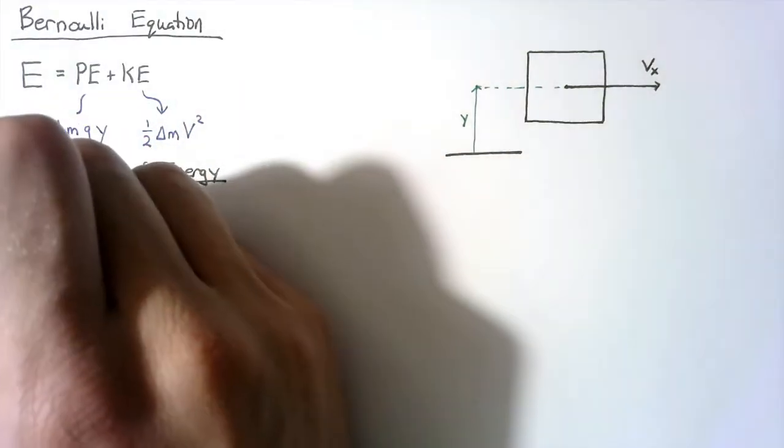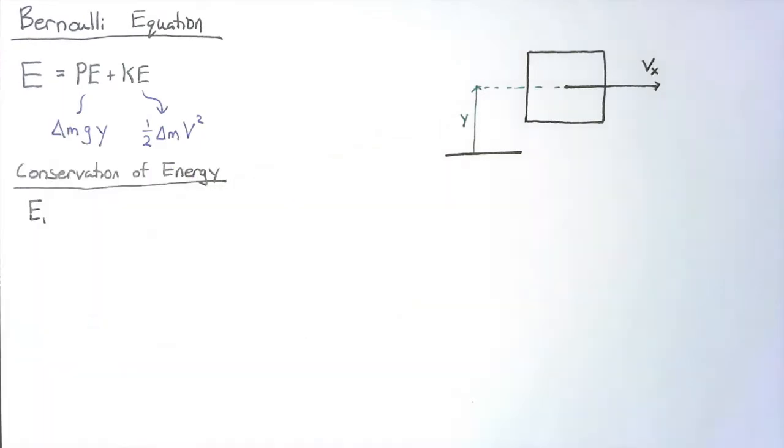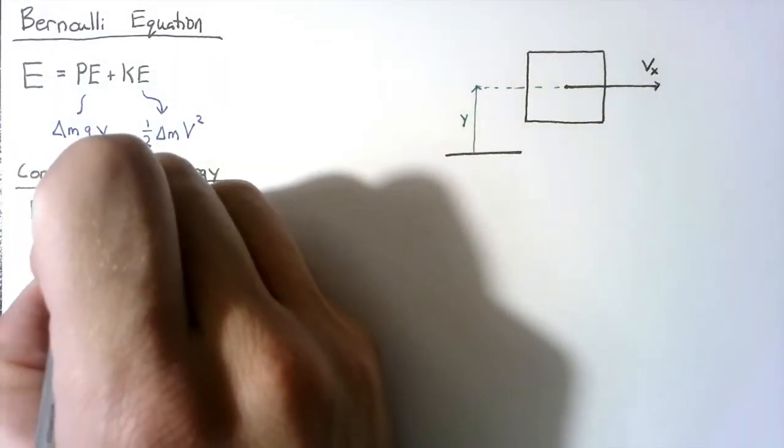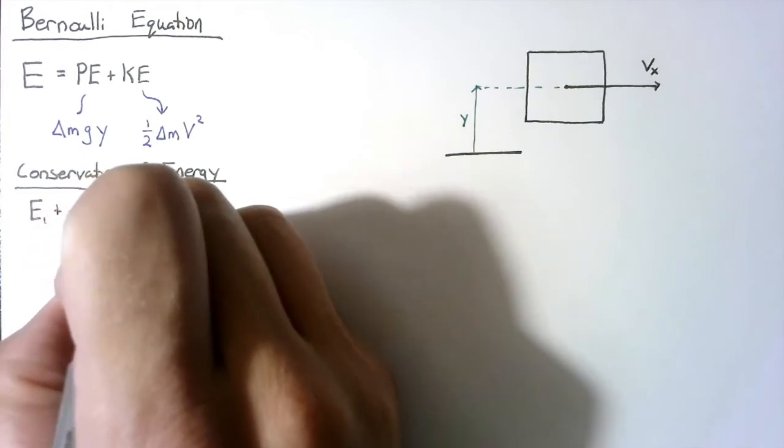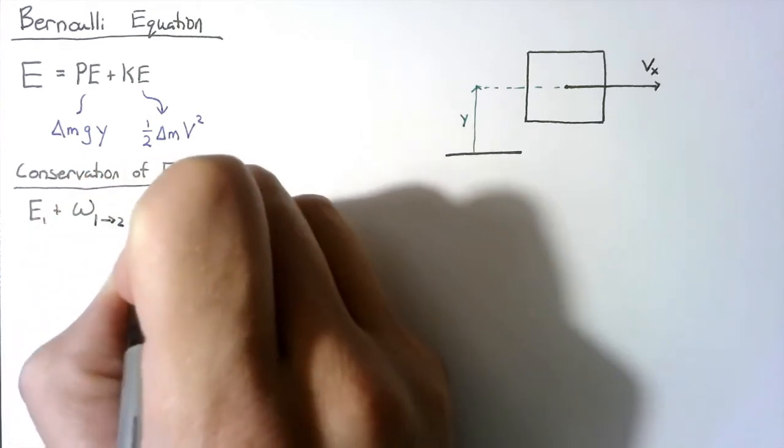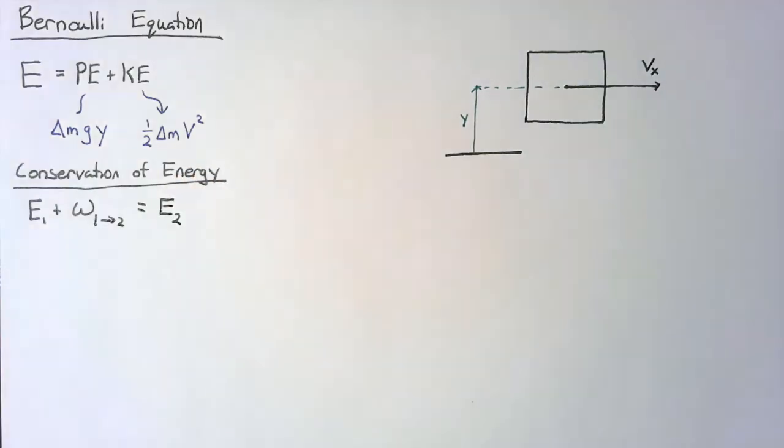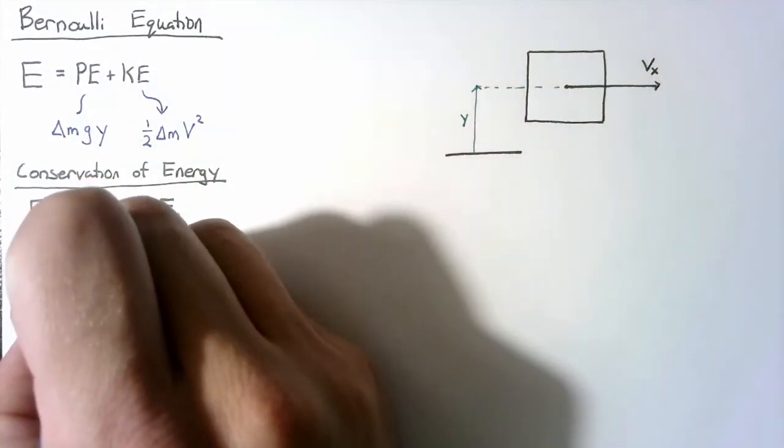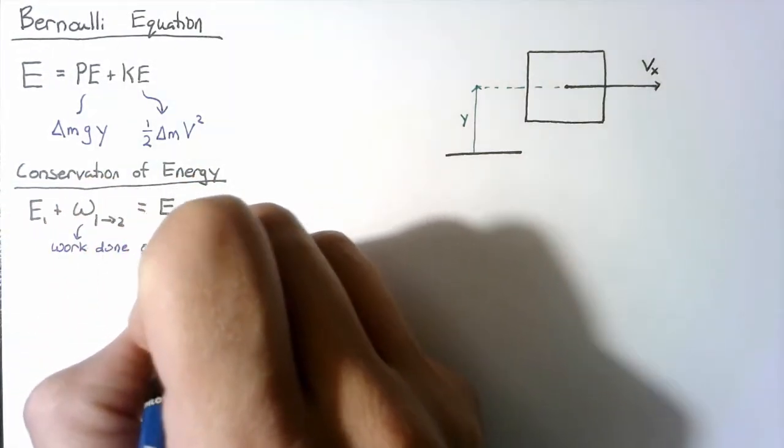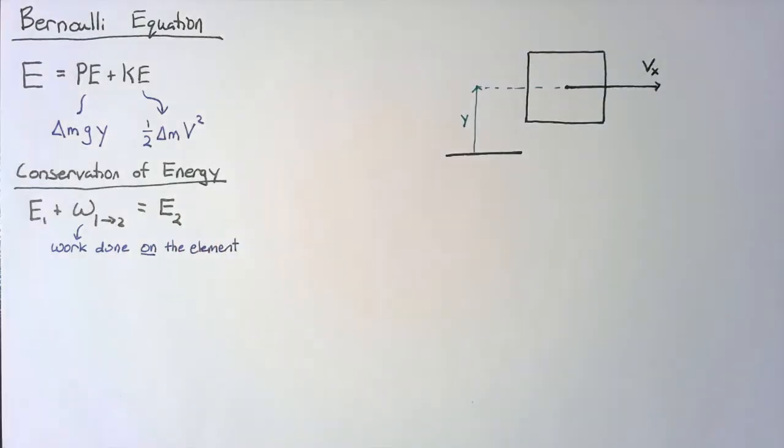And all this says is that the energy at some state one plus whatever work is done from state one to state two is going to be equal to the energy of state two. Now, it's easy to have confusion about this work, but this is the work done on the element.